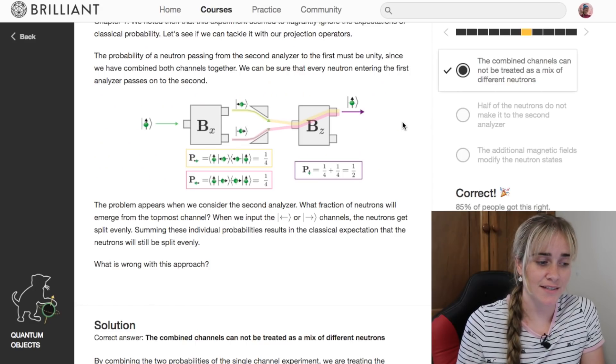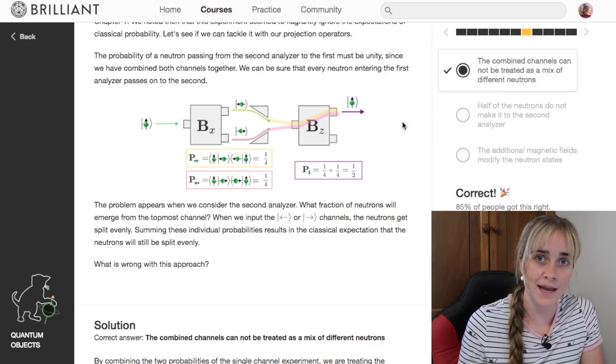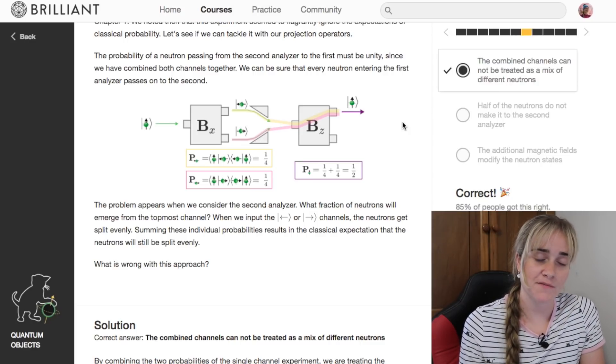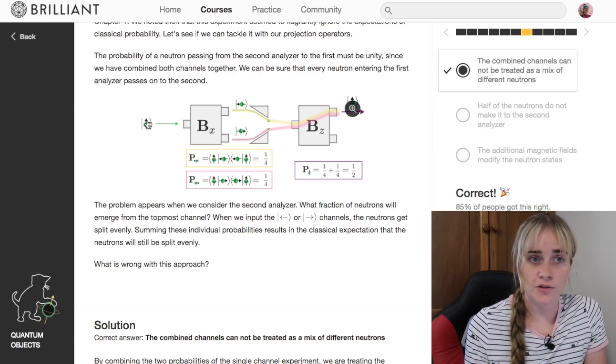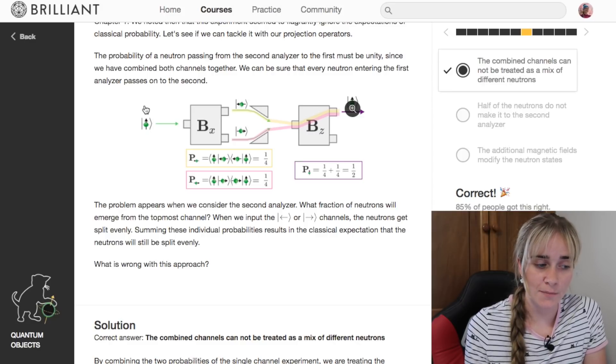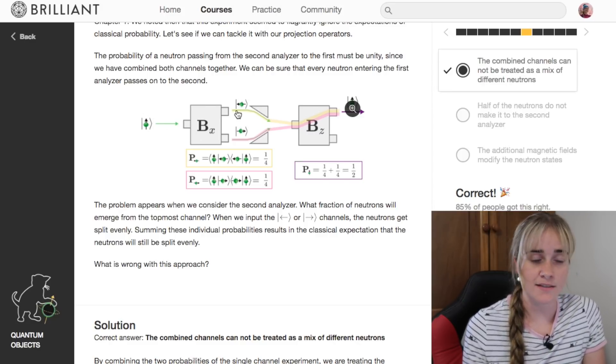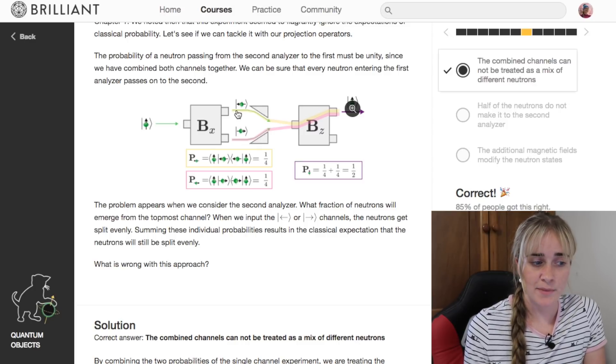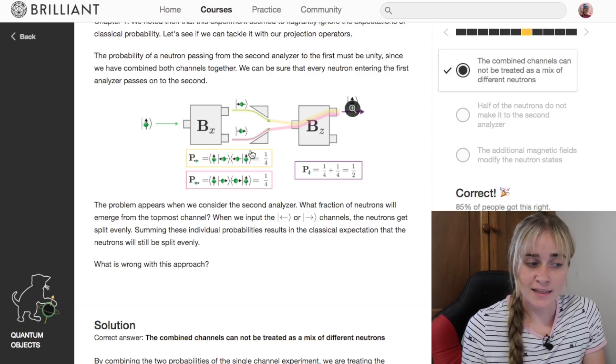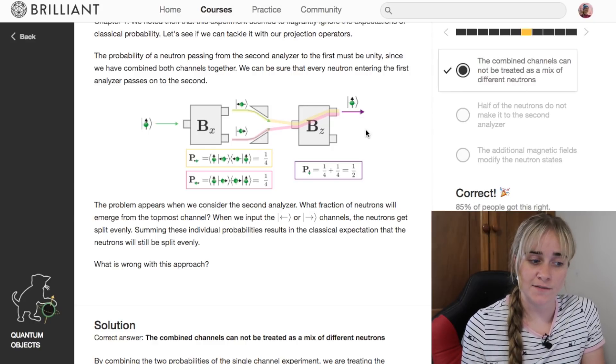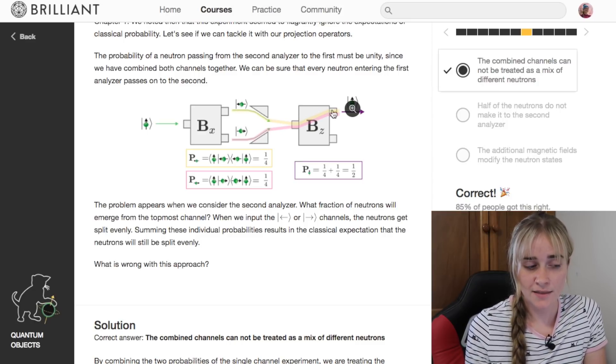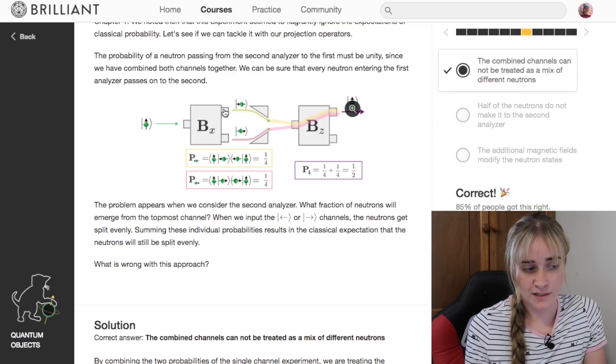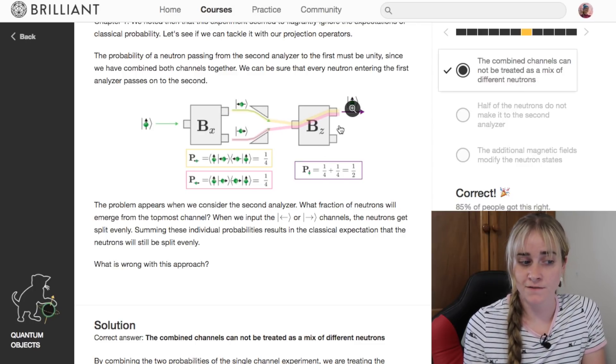We can use this new knowledge to look back at one of the experiments we've discussed in a previous video. That's the one where we take an input neutron which we know to be spin up, we put it through an x analyzer, this is a Stern-Gerlach analyzer to measure it as either spin left or spin right, and then we again measure its z direction of spin, so either spin up or spin down.